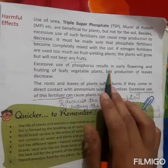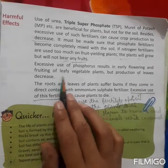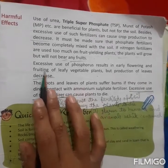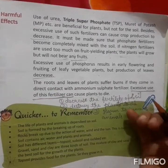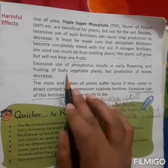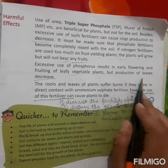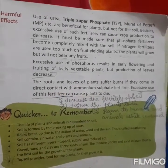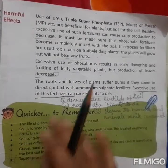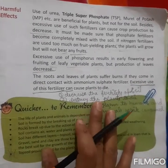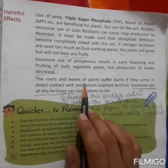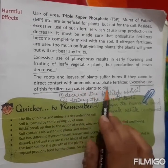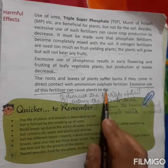Excessive use of phosphorus results in early flowering of fruiting leafy vegetable plants, but production of leaves decreases. The roots and leaves of plants can suffer burn if they come into direct contact with ammonia sulfate fertilizer. Excessive use of fertilizer can cause plants to die.